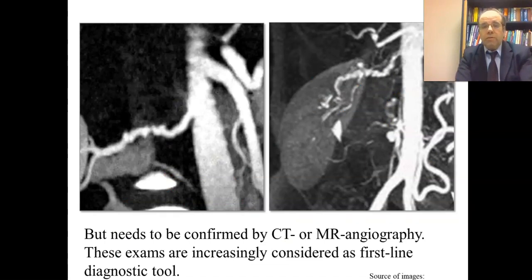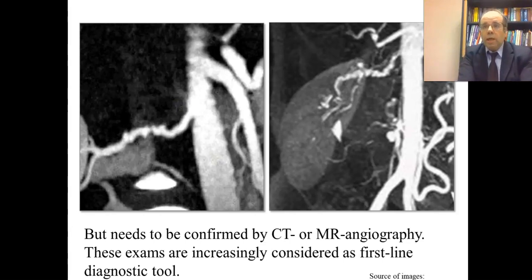The diagnosis of FMD needs to be confirmed by CT or MR angiography. In most cases, renal or carotid duplex alone is not enough. CT and MR angiography are increasingly considered first-line diagnostic tools. I see quite a lot of patients with severe hypertension — young women told they don't have FMD because their renal duplex was negative. But if the index of suspicion is high, that is not sufficient; it is better to proceed to CT or MR angiography.